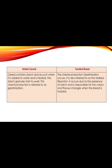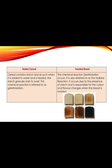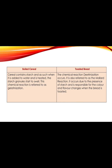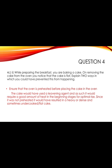As the cereal continues to swell in the heated liquid, it starts to thicken — as you notice when making porridge. For toasted bread, the color and texture change due to a chemical reaction called dextrinization. During dextrinization, starch is broken down into dextrin, causing the bread to become darker in color with a different aroma, flavor, and texture.